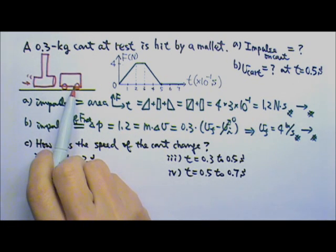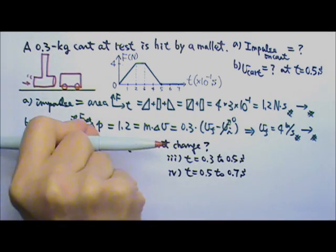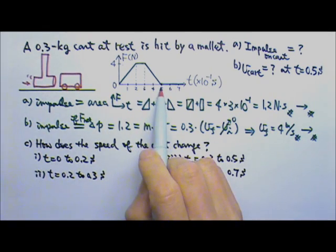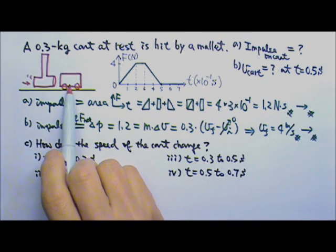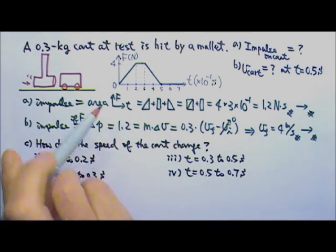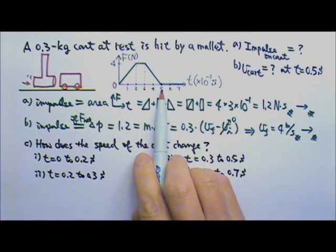The cart starts from rest. And the force from the mallet on the cart goes to the right for the first 0.5 seconds. So the acceleration of the cart goes to the right for the entire 0.5 seconds.